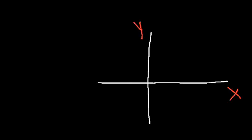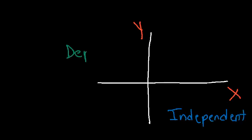In this video, we're going to focus on the dependent variable and the independent variable. The independent variable is associated with the x-axis. The dependent variable is associated with the y-axis, or the y-variable. Y depends on x, so the dependent variable depends on the independent variable.